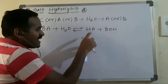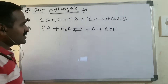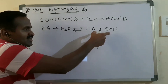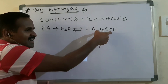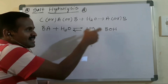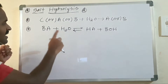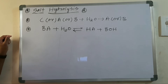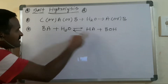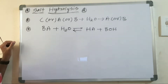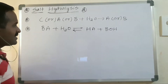In the reverse reaction, when acid HA reacts with base BOH, it forms salt and water — that is the neutralization reaction. The forward reaction — BA reacting with water to give HA and BOH — is salt hydrolysis.